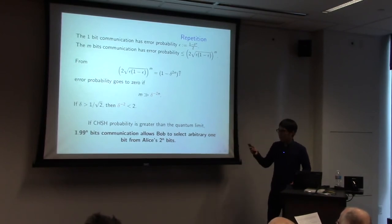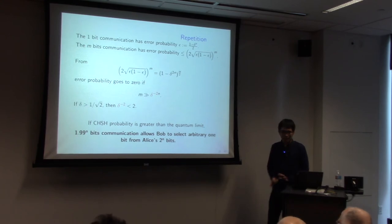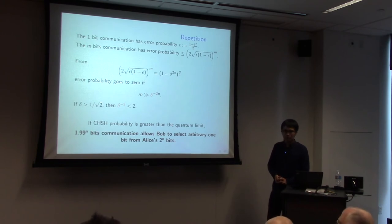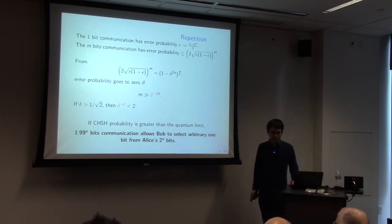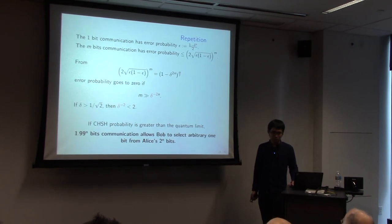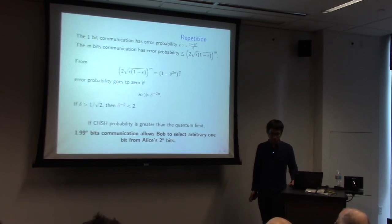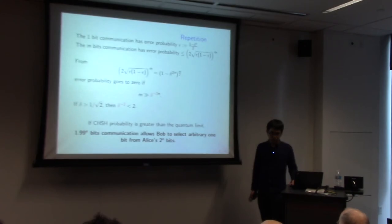Thank you for your attention. Do we have any questions? This non-local box has the odd property that it presumably communicates no information, yet it's very useful in all these protocols. From a naive point of view, there must be a way in which it really is communicating information of some form. Do you have some intuitive idea or explanation for that?